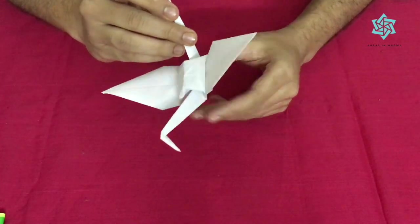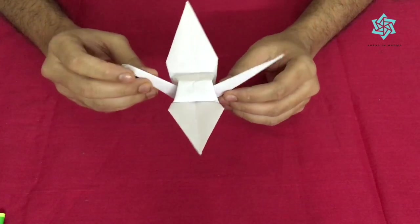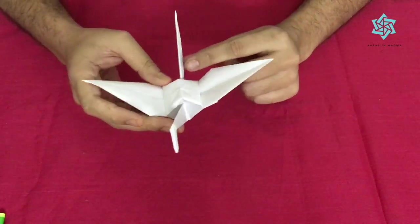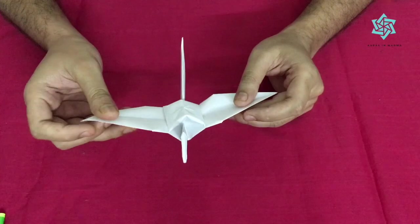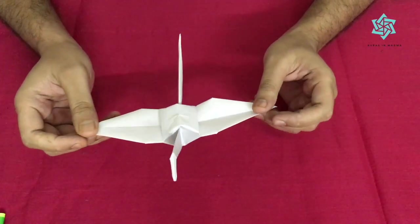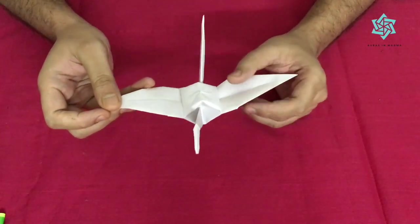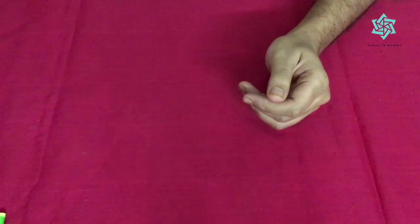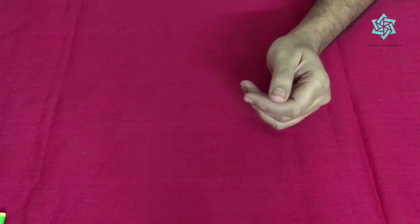An origami crane is one of the oldest origami documented. The first book on origami was Hiden Senbazuru Orikata, which was the secret of a thousand origami cranes, which gave a method of how to fold the crane. So today we'll see how we fold an origami crane.